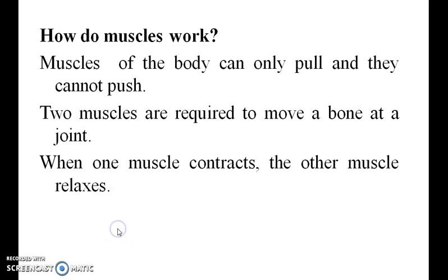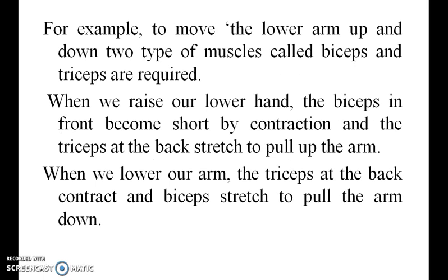Muscles of the body can only pull; they cannot push. Two muscles are required to move a bone at a joint. When one muscle contracts, the other relaxes. For example, to move the lower arm up and down, two types of muscles called biceps and triceps are required. When we raise our lower arm, the biceps in the front become short by contraction and the triceps at the back stretches to pull up the arm.